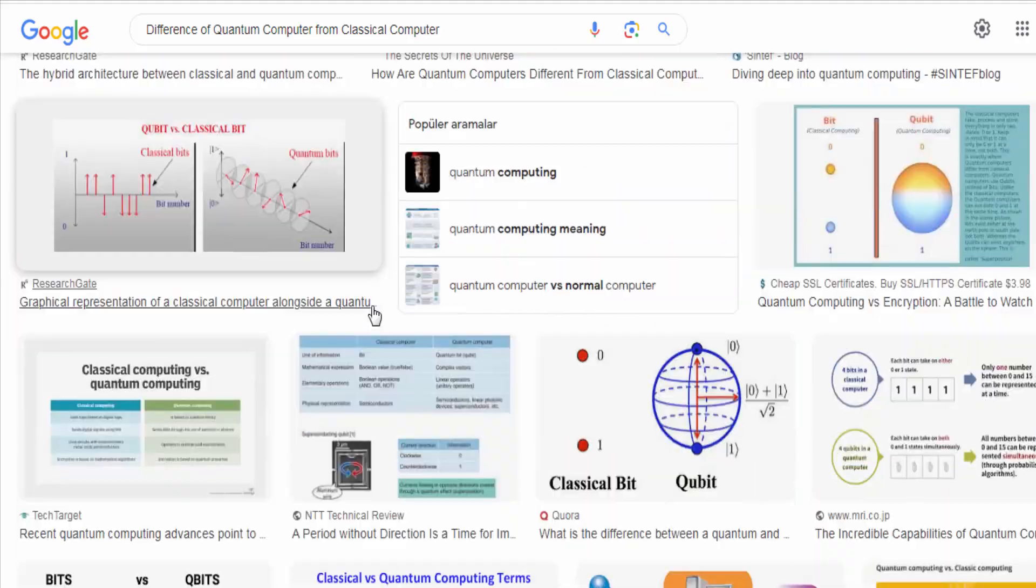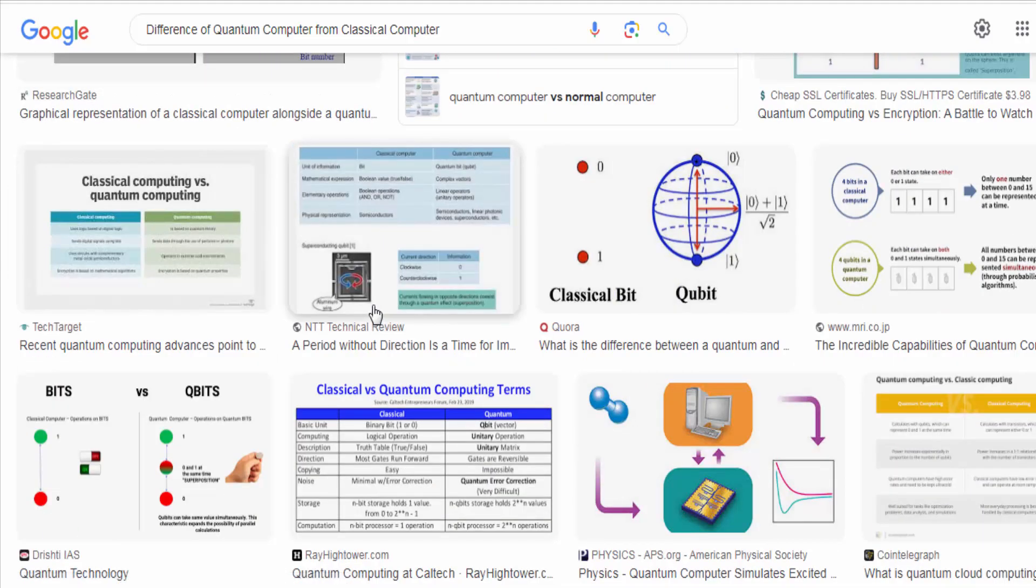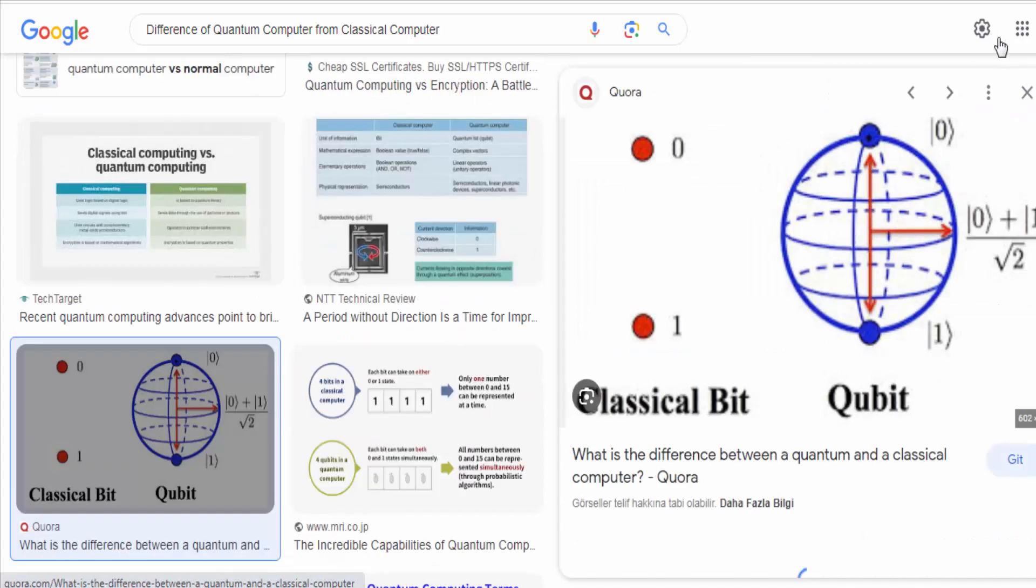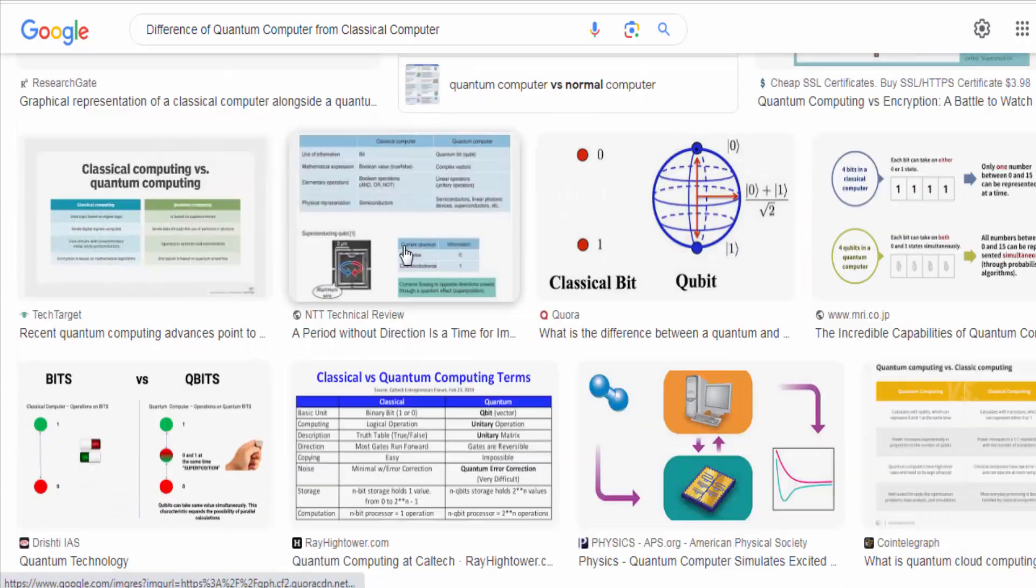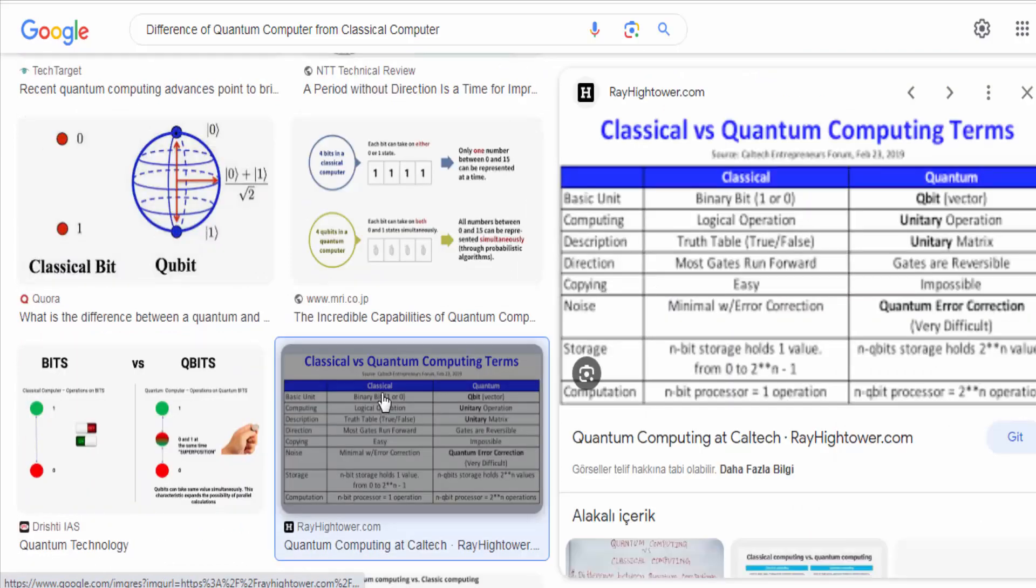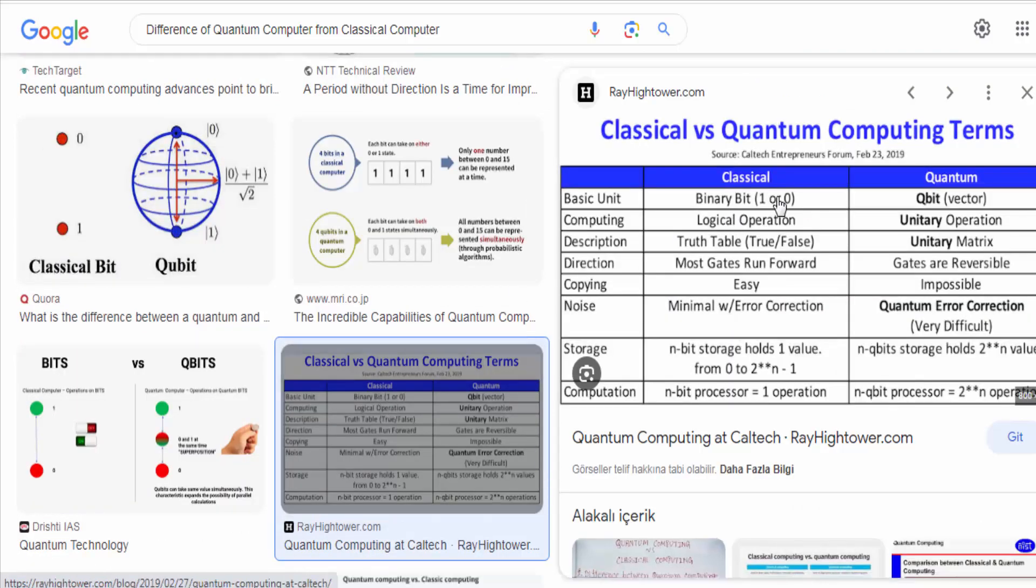Quantum entanglement: Another key property of quantum computers is entanglement. Entanglement occurs when two or more qubits become correlated, even when physically separated. It allows quantum computers to perform operations on the collective states of multiple qubits, enabling complex computations and faster information processing.